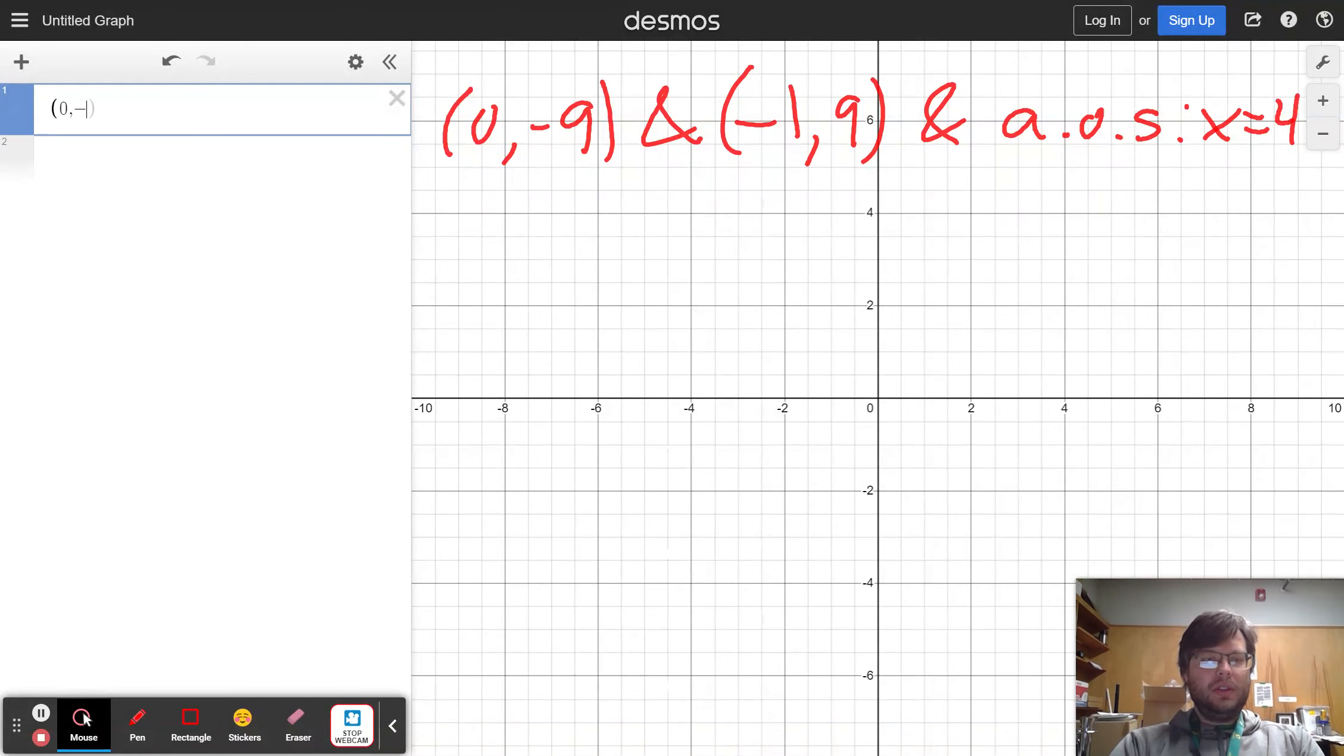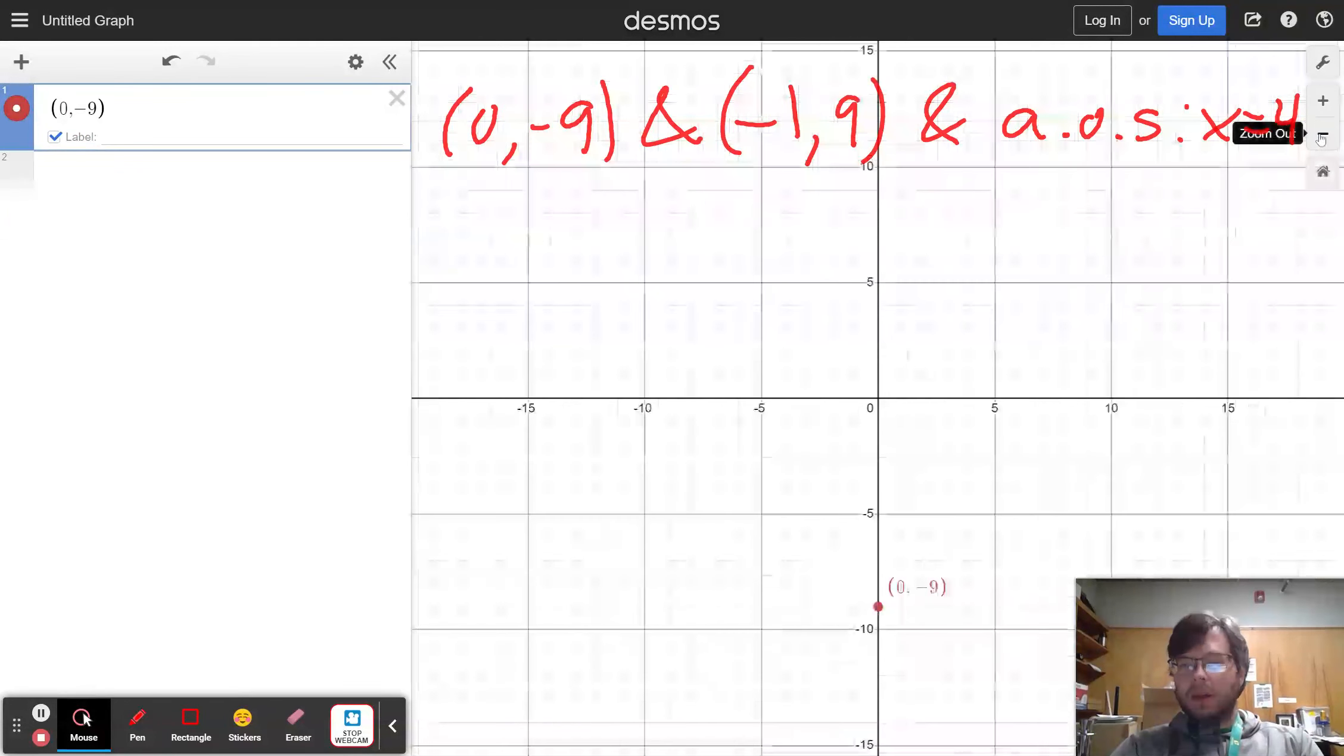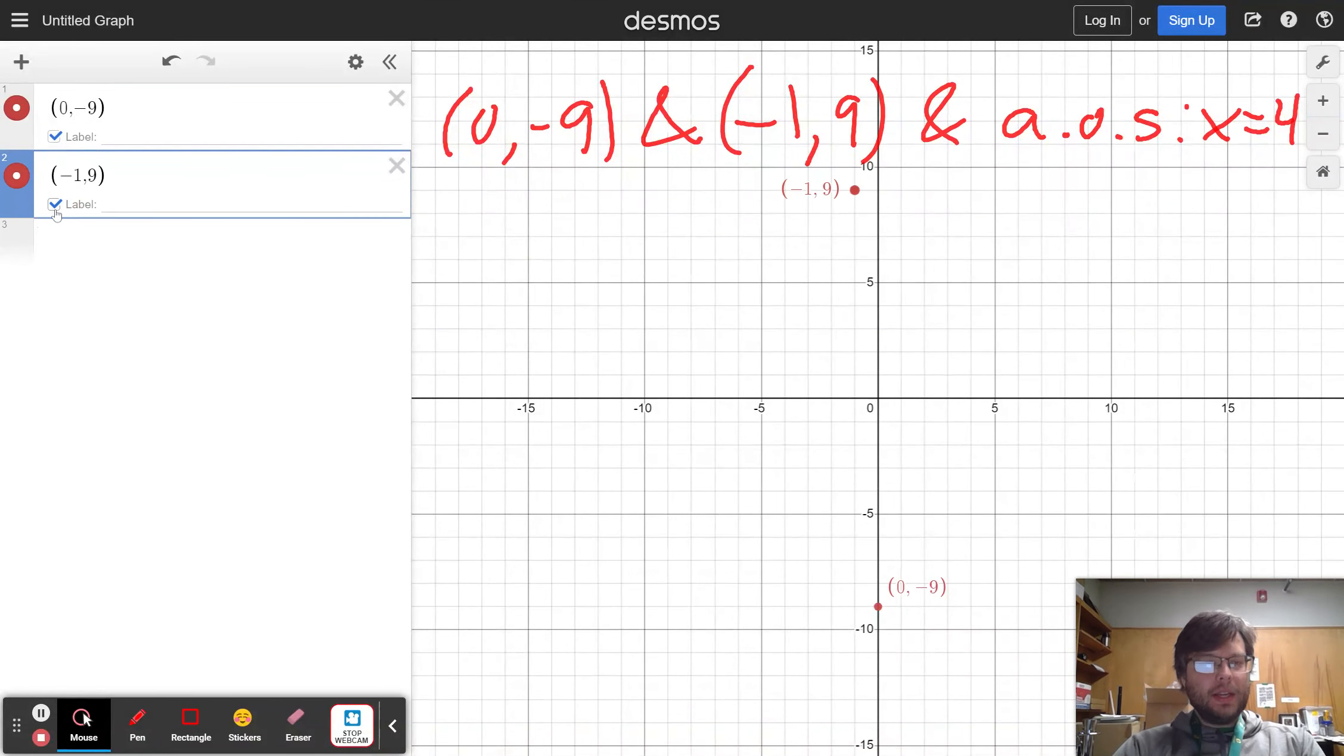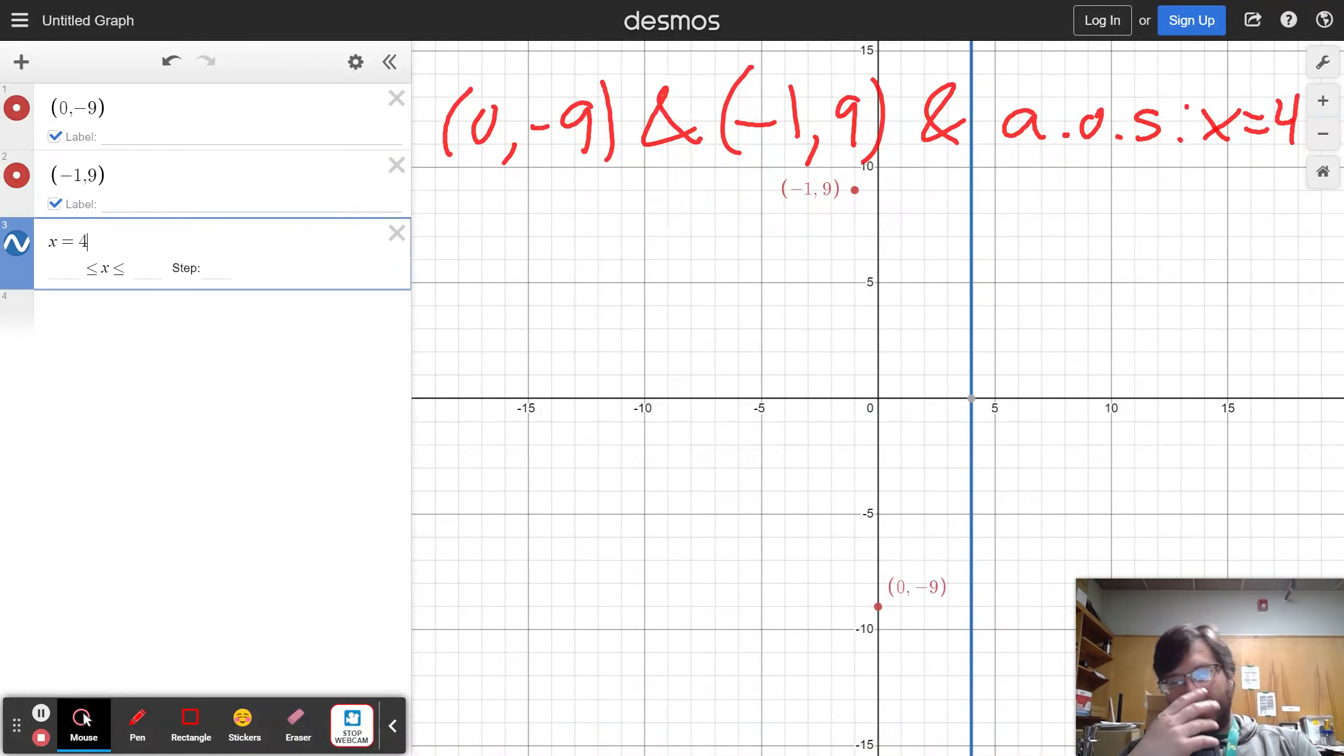You can see a point down there, actually you can't because I need to zoom out. Now you can see a point down there, you can see a point over here, and let's label that, and you've got an axis of symmetry x equals 4.